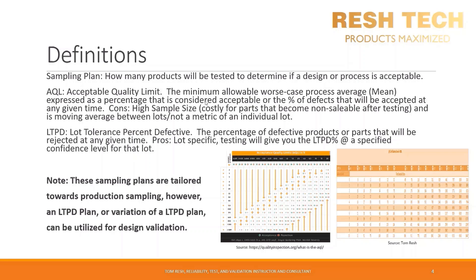Let's define an LTPD Sampling Plan. LTPD stands for Lot Tolerance Percent Defective — the percentage of defective products or parts that will be rejected at any given time. LTPD Sampling Plans are lot-specific, and testing will give you the LTPD percentage at a specified confidence level for that particular lot.